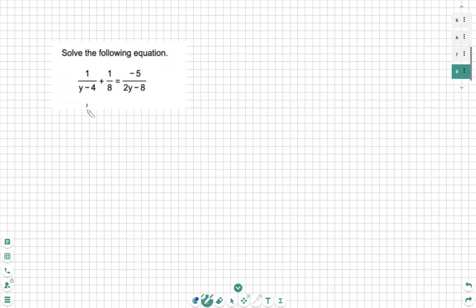The first thing we do is make sure all denominators are completely factored. We see y minus 4 cannot be factored anymore. The 8 on this denominator cannot be factored anymore. And then on this one, we can take a GCF. We take a 2, and it becomes y minus 4.